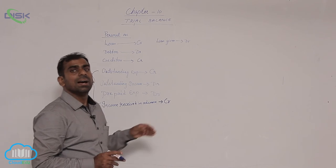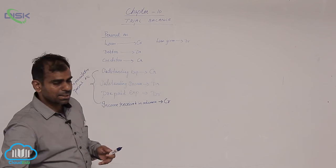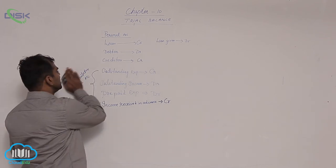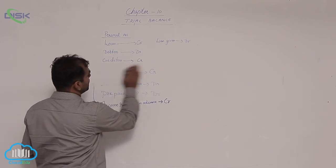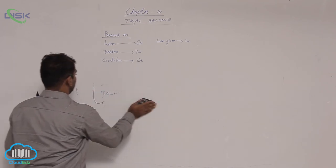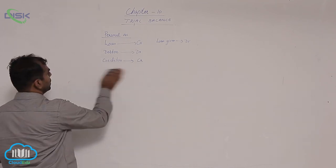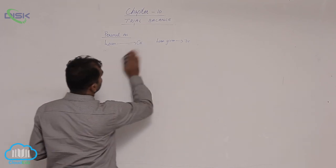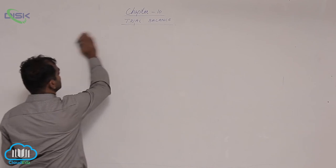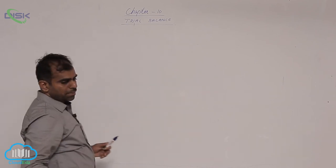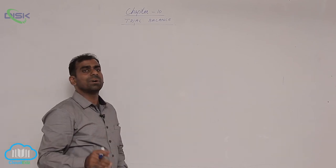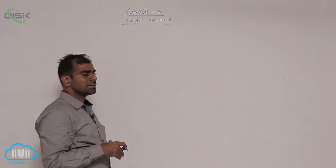All four — outstanding expense, outstanding income, prepaid expense, and income received in advance — are called representative personal accounts. To summarize: outstanding expense shows credit balance, outstanding income shows debit balance, prepaid expense shows debit balance, and income received in advance shows credit balance. I think that is clear. Let us move on to further and see a few extra things which we have not come across.